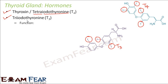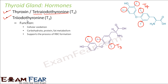The function of these thyroid hormones is primarily in cellular oxidation — when we eat food, it reaches each cell of the body after absorption, and that food needs to be oxidized to release energy. These hormones also help in the metabolism of carbohydrates, proteins, and fats — breaking them down into simpler forms like monosaccharides, amino acids, and fatty acids respectively. They also support the process of RBC formation and maintain water and electrolyte balance in the body.